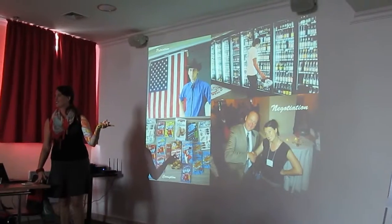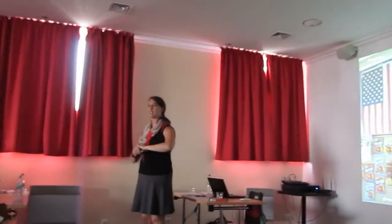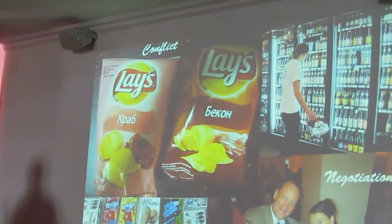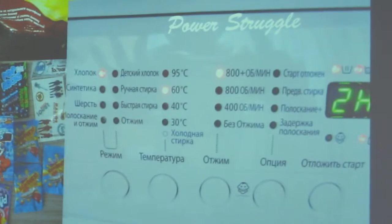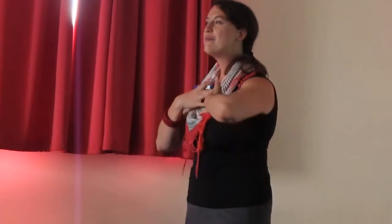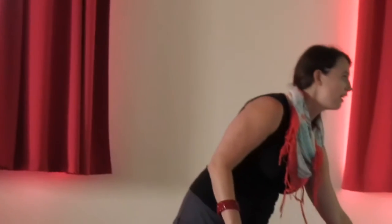Negotiation — two or more sides coming together for agreements. Conflict — I can't decide between the crab chips or the bacon chips. Power struggle — when I moved to Luhansk alone and tried to do laundry, I spoke no Russian and could never get the washer to work. I'm human and should have power, but the machine had the power — that's a power struggle, two things that want power clashing.